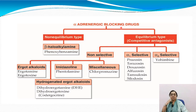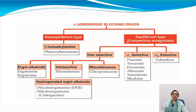Classification of alpha adrenergic blocking drugs: they can be divided into two main groups — non-equilibrium type and equilibrium type. The non-equilibrium type is phenoxybenzamine, and the equilibrium type is a competitive antagonist, which can be divided into non-selective and alpha-1 selective as well as alpha-2 selective drugs.